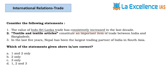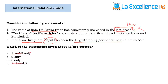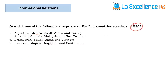The next question can be solved with elimination. Statement 1 — value of Indo-Sri Lanka trade has consistently increased in the last decade. Over a decade, consistent increase is unlikely, so eliminate. Statement 2 — textile and textile articles constitute an important trade item between India and Bangladesh; yes, given jute cultivation in West Bengal and Bangladesh. Statement 3 — Nepal has been the largest trading partner of India in South Asia in the last five years. India's largest trading partner in South Asia is Bangladesh, not Nepal. Answer is statement 2 only.